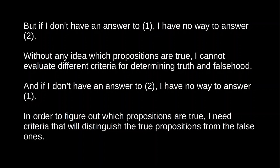But the problem is that if I don't have an answer to the first question, then it seems I have no way to answer the second. If I don't have any idea which propositions are true, I'm not going to have any way to figure out what the criteria are for determining truth and falsehood — because the question is, what features are indicative of truth? And without a list of true propositions and false propositions, there's no way to make any kind of judgment. Similarly, if I don't have an answer to the second question, I seemingly can't answer the first, because in order to determine which propositions are true, I need a criterion for distinguishing the true from the false. Without an answer to the first question, I can't answer the second. And without an answer to the second question, I can't answer the first.